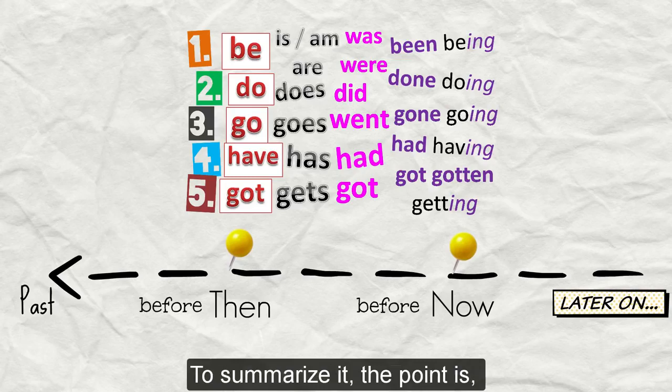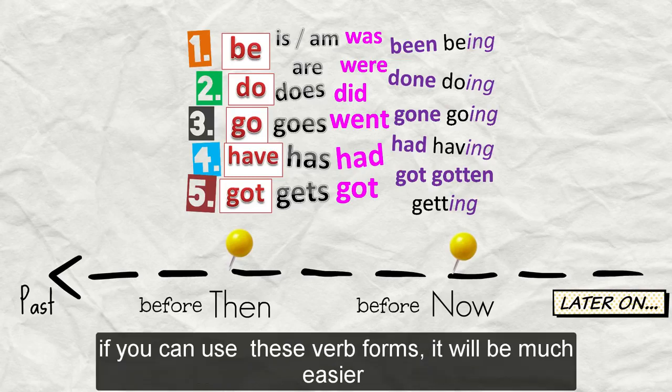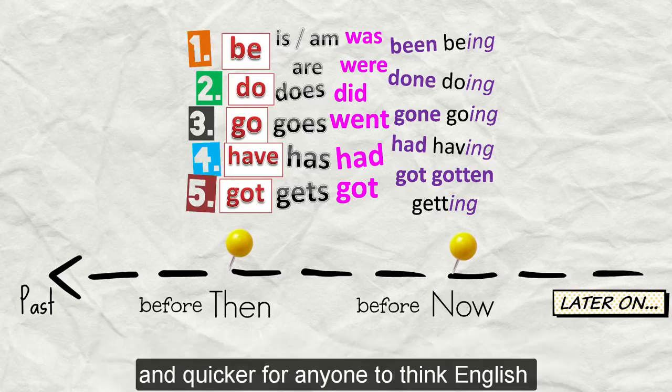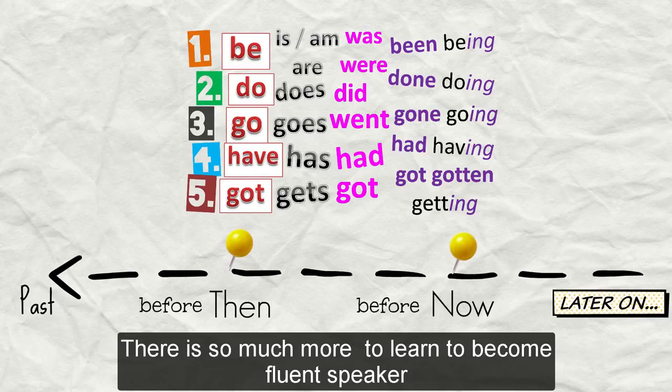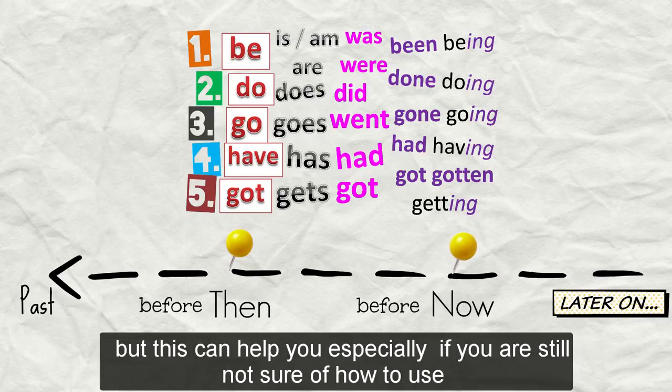To summarize it, the point is, if you can use these verb forms, it will be much easier and quicker for anyone to think English. There is so much more to learn to become a fluent speaker, but this can help you, especially if you are still not sure of how to use I'm being, I've been.